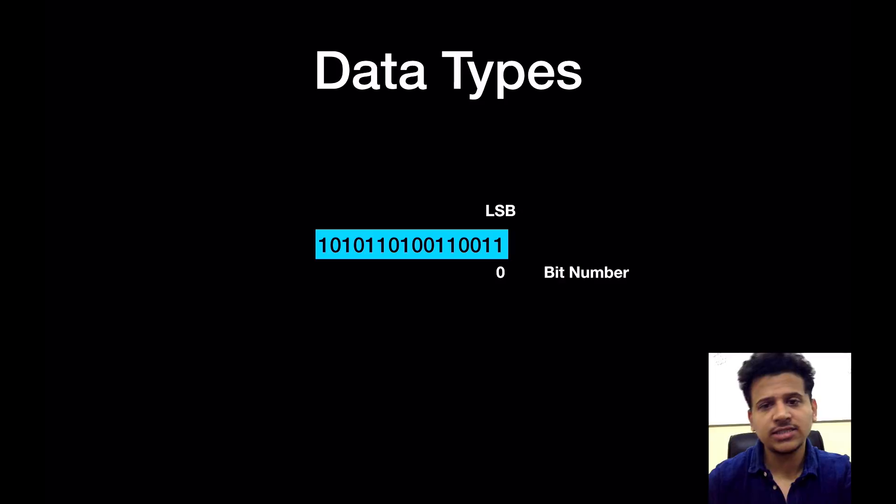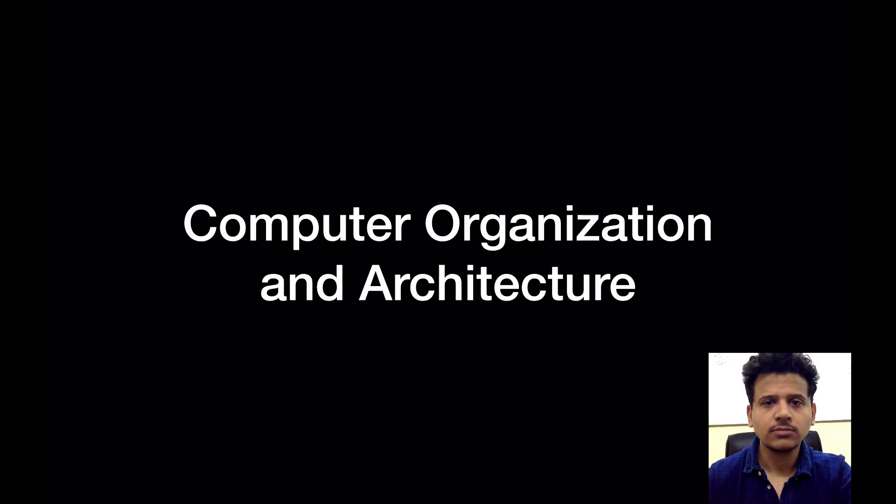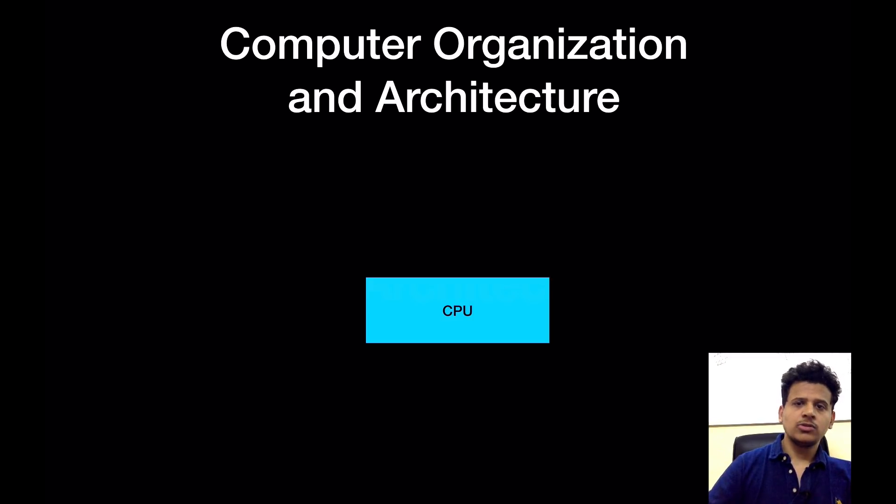This is a binary number. So the rightmost bit number at the 0th position is known as the least significant bit. Leftmost bit is known as the most significant bit.